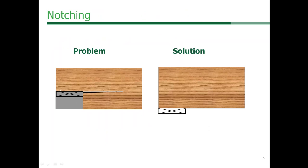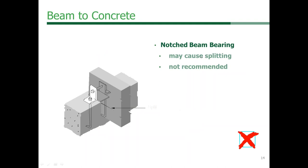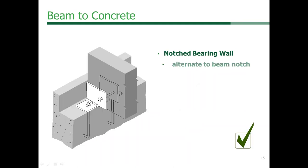Here's a notch in a wood member with a bearing connection. The load transfers through the wood member and then in bearing onto the support. This causes a stress concentration — tension perpendicular to grain — which may cause splitting. That is not recommended. A better solution is lowering the bearing position and not notching the wood member, so you avoid concentrating tension perpendicular to grain. Here's another example where a notch in bearing may cause splitting; the better solution is lowering the bearing point without any notch.